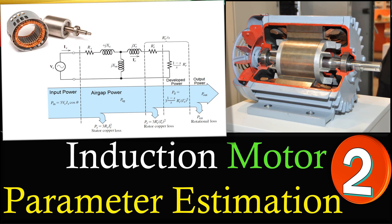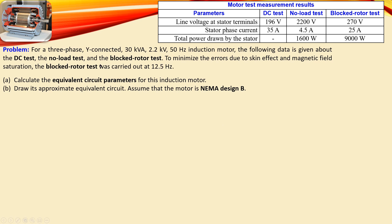Hi everyone, and welcome to a new video about an induction motor parameter estimation problem. This is example number two, where we'll do the calculations for the circuit parameters of an induction motor. We have a three-phase Y-connected induction motor with 30 kVA apparent power, 2.2 kW, and 50 Hz operating frequency. The DC test, no-load test, and block rotor test have been performed. To minimize errors due to skin effect and magnetic saturation, the block rotor test is done at a low frequency — 25% of the operating frequency — per IEEE recommendation.